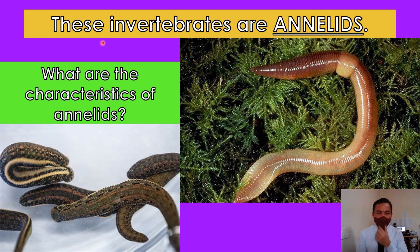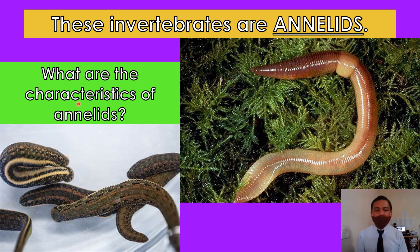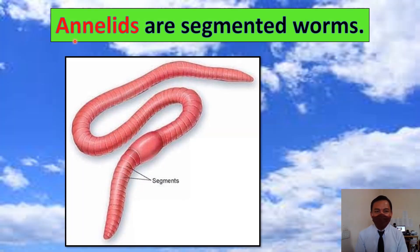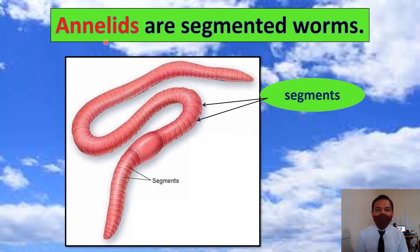Look at the picture. These invertebrates are annelids. What are the characteristics of annelids? Annelids are segmented worms. Look at the picture — these are the segments of annelids.